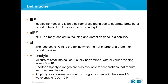Before we jump into that, the definitions shown here will be important to understand as I go forward. IEF is an electrophoretic technique used to separate proteins or peptides based on their isoelectric points. CIEF — when we add the C — simply indicates that isoelectric focusing is done within a capillary. PI refers to the isoelectric point, the pH at which the net charge on a protein or peptide is zero. The ampholyte is a mixture of small molecules with PI values ranging from 2.5 to 10. Shorter ampholyte ranges are also available for separations requiring improved resolution. Ampholytes have a strong absorbance in the lower UV, 200 to 214. As a result, our CIEF platform method utilizes UV absorbance at 280 to get around the issue of detecting the ampholytes themselves.